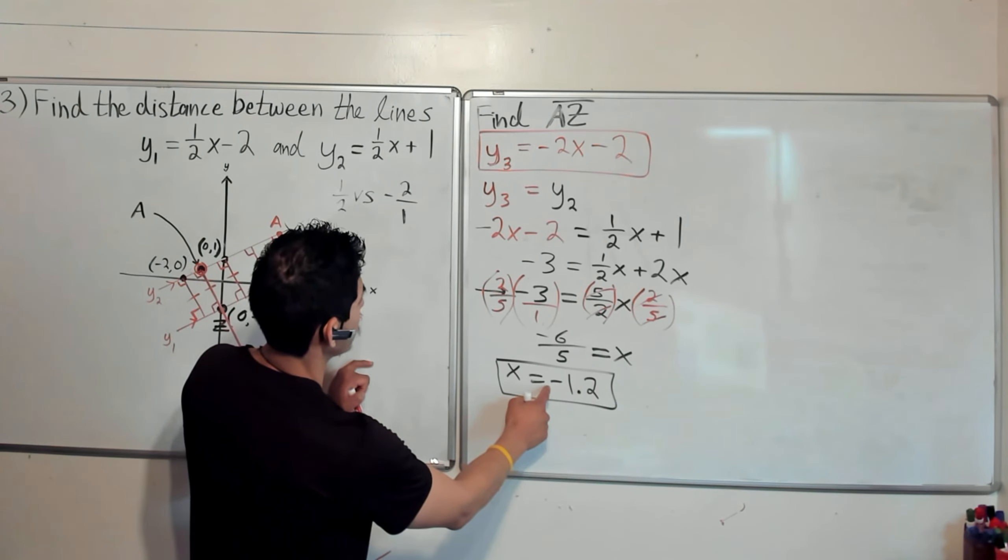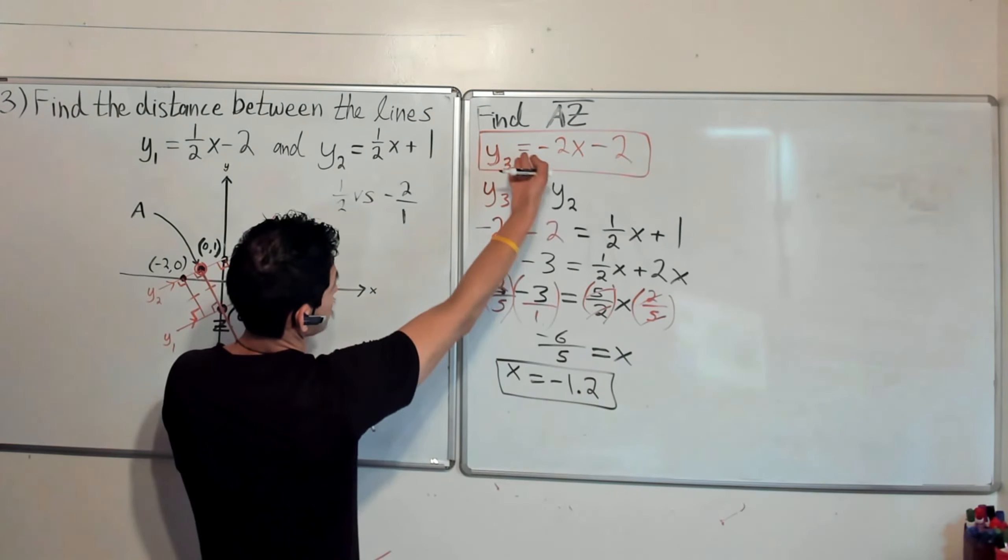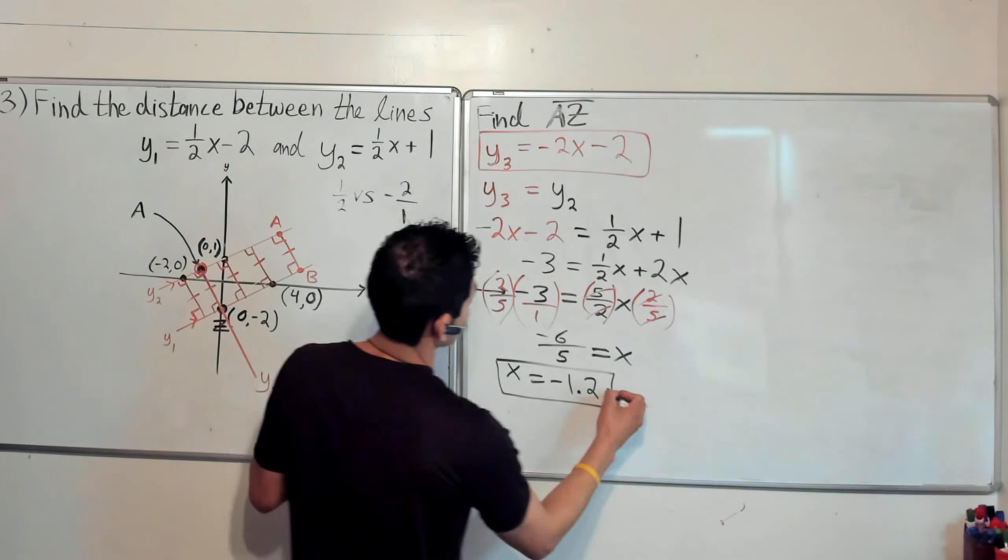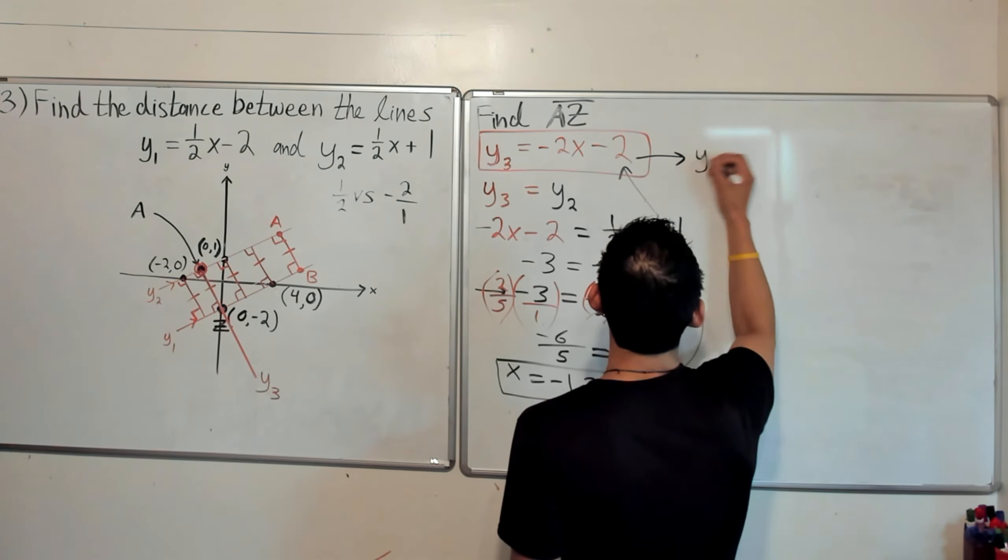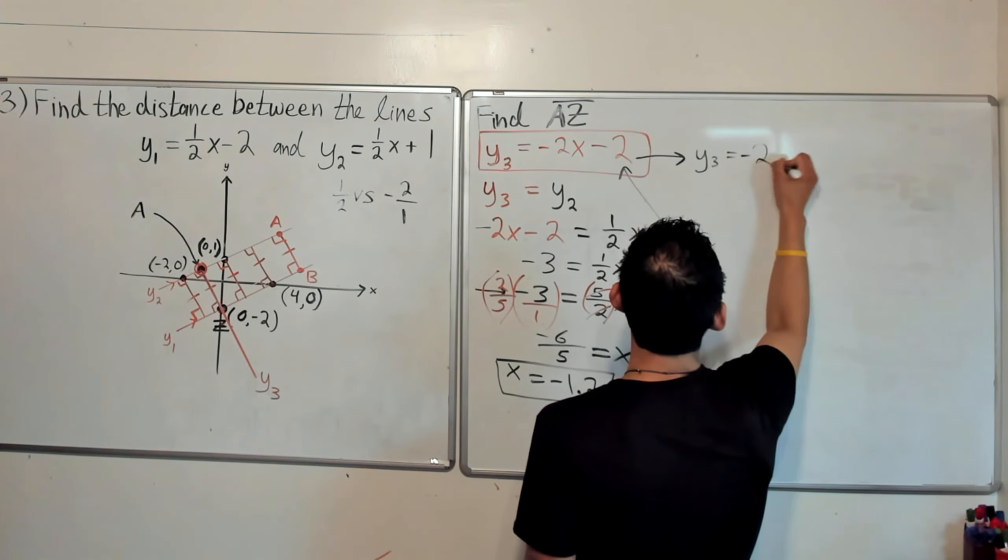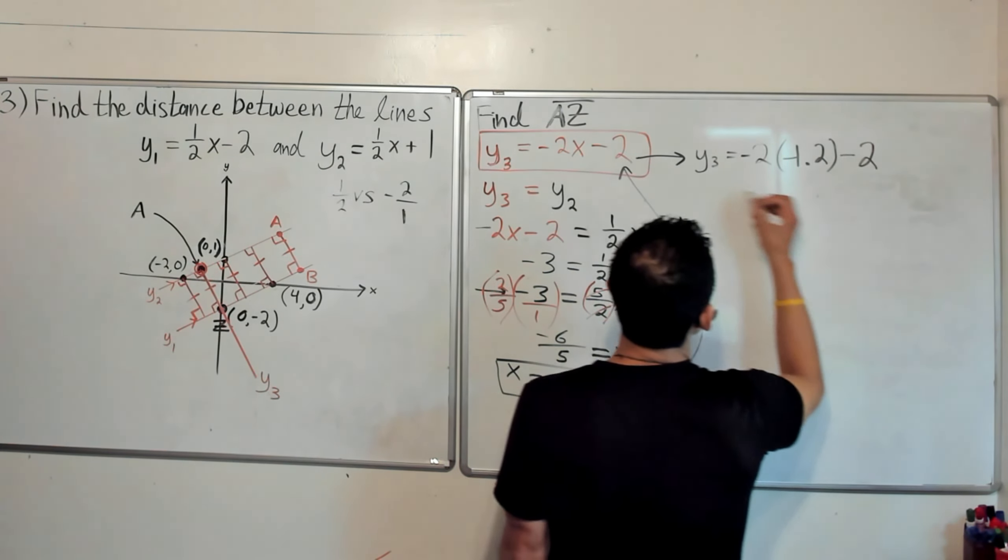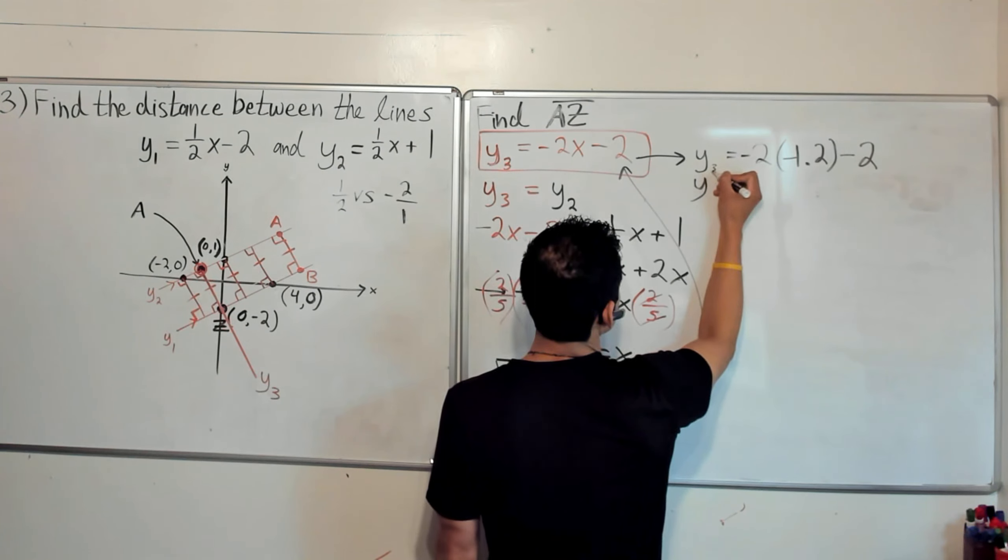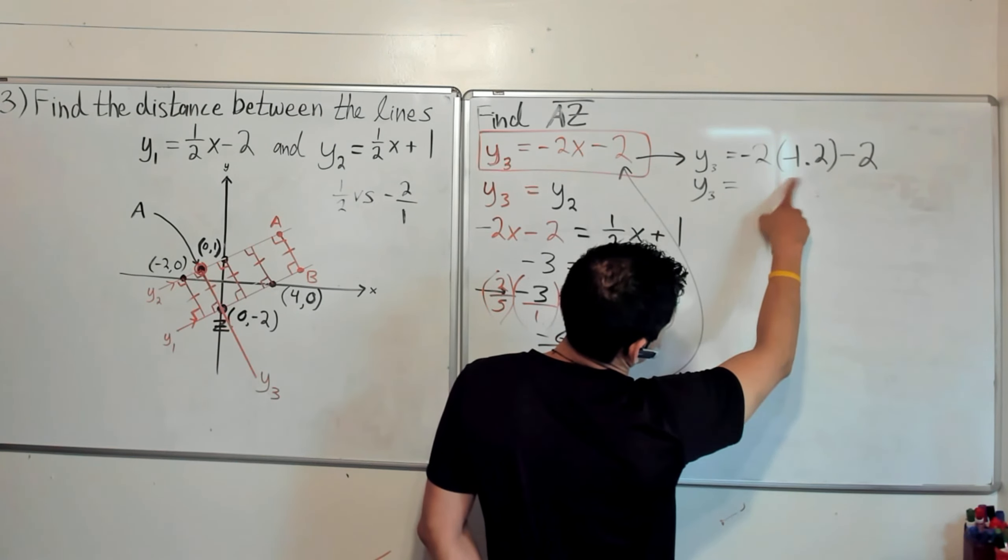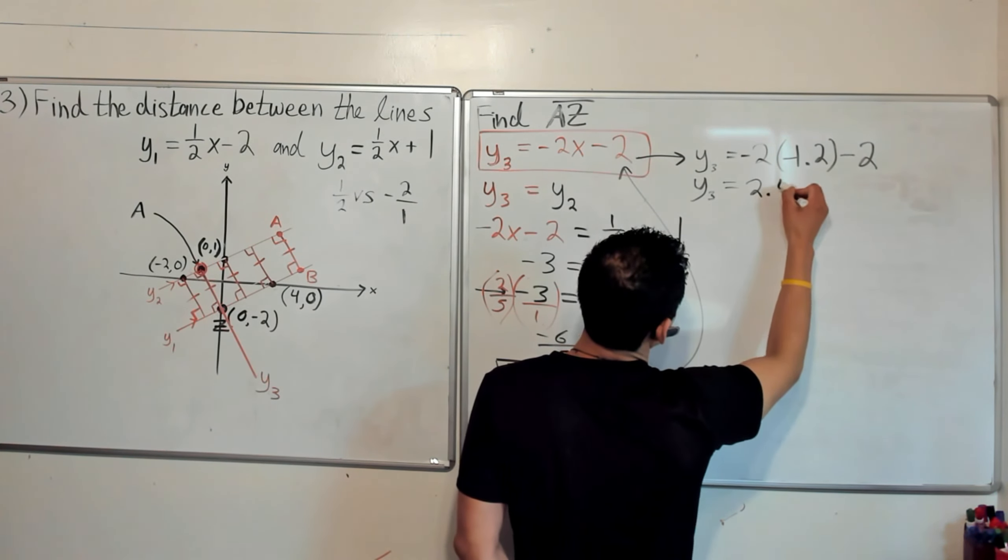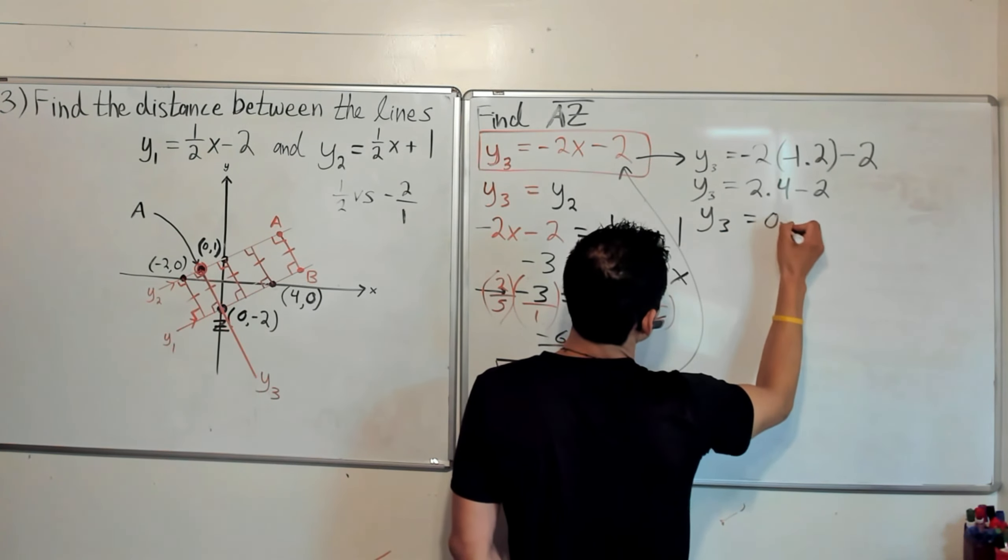So then, now we find y. I just plug in -1.2 into either y3 or y2. It doesn't matter. I'm just going to plug it into y3 because it's right there. We're plugging this guy into here. We're going to get y3 = -2 times -1.2 - 2. y3 is equal to, what is that? It's going to be 2.4 - 2. So then y3 will be equal to 0.4.